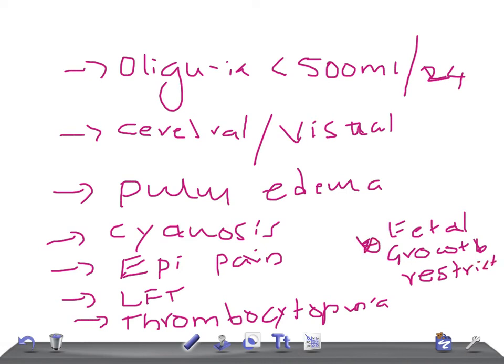So these are the important criteria for the diagnosis of severe preeclampsia. Remember the blood pressure, that's really very important. Proteinuria is very important. And the other things like oliguria, cerebral and visual disturbances, pulmonary edema, cyanosis, epigastric or right upper quadrant pain, liver function test impaired, thrombocytopenia, and fetal growth restriction. Thank you so much for watching this video, take care.